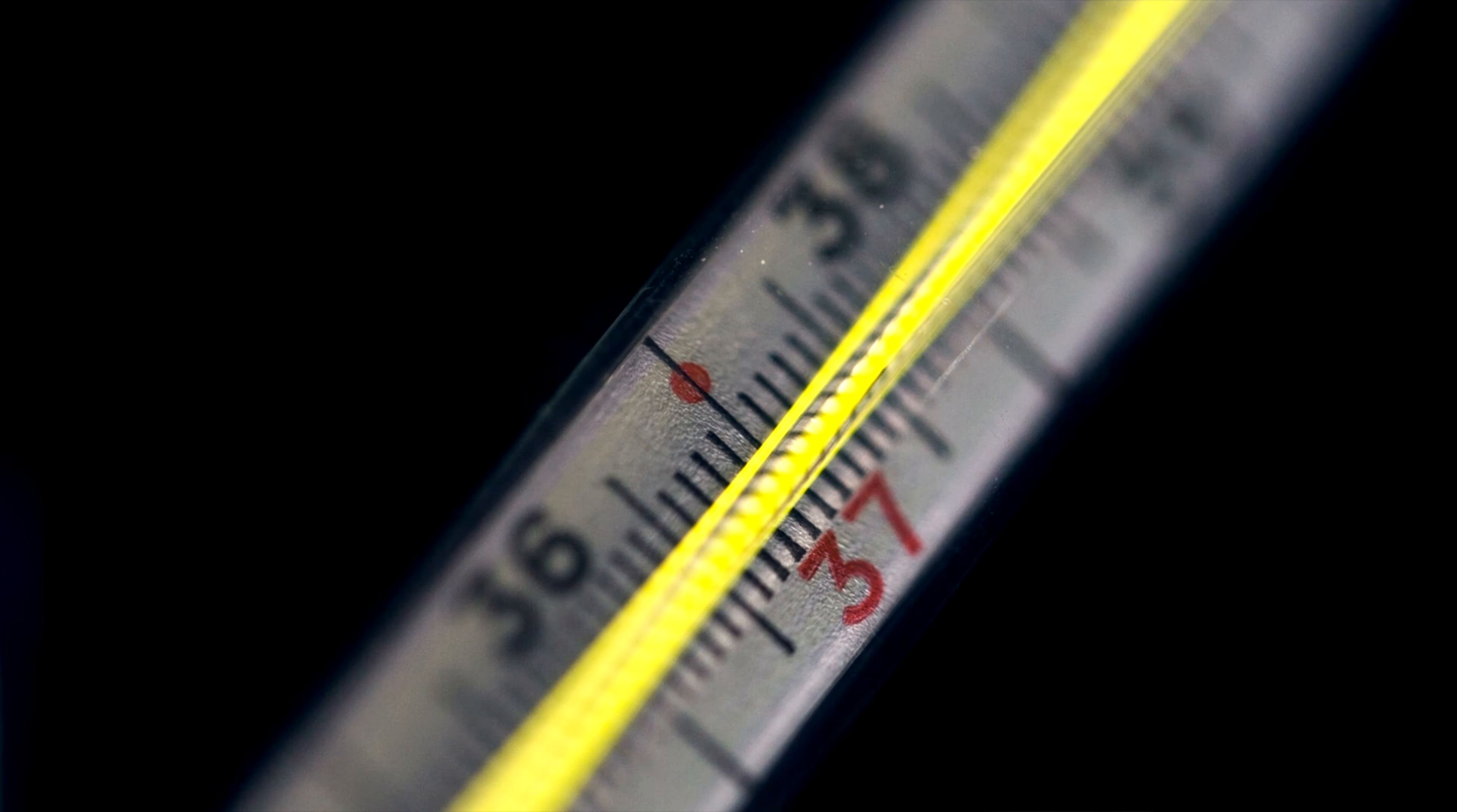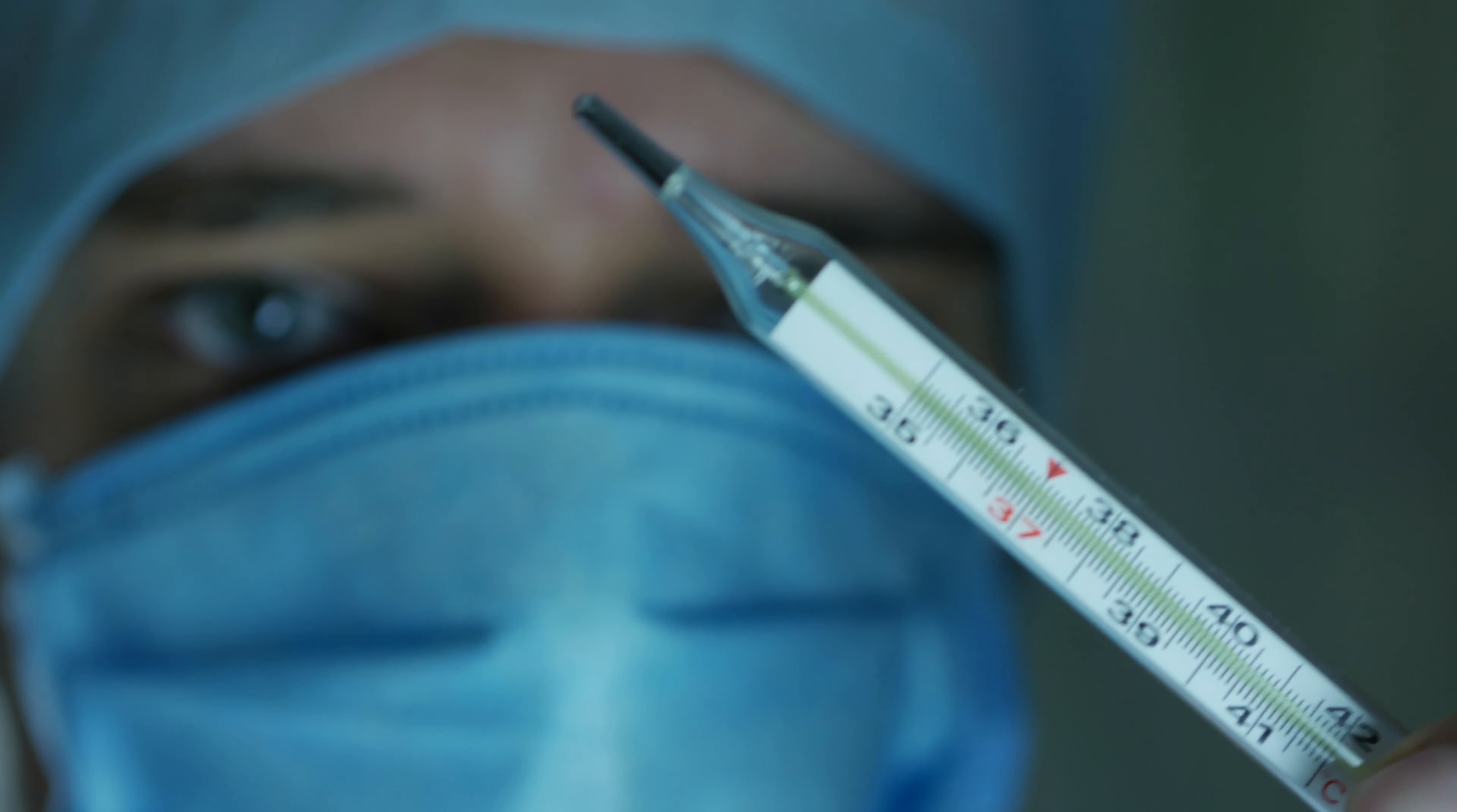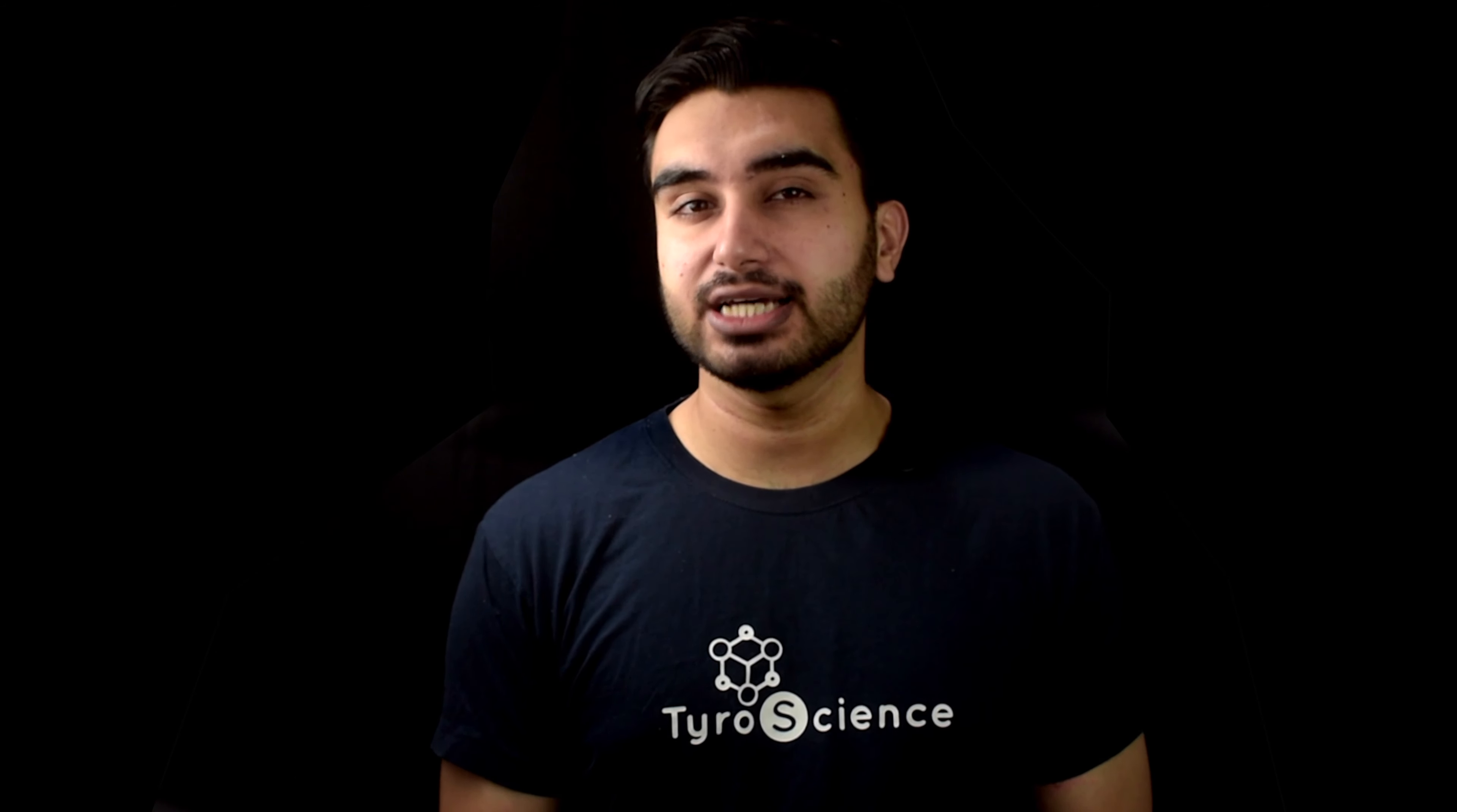For years we've been told that average body temperature is 98.6 degrees Fahrenheit or 37 degrees Celsius. It may have been accurate earlier, but not anymore. There has been a constant change in the normal body temperature of humans for years. We are cooling down.